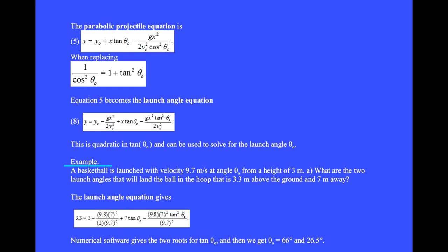For example, a basketball is launched with a velocity of 9.7 meters per second at angle θ₀ from a height of 3 meters. What are the two launch angles that will land the ball in the hoop that is 3.3 meters above the ground and 7 meters away? Putting in the numbers, numerical software gives the two roots for tan θ₀. And then we get θ₀ equals 66 degrees and 26.5 degrees.